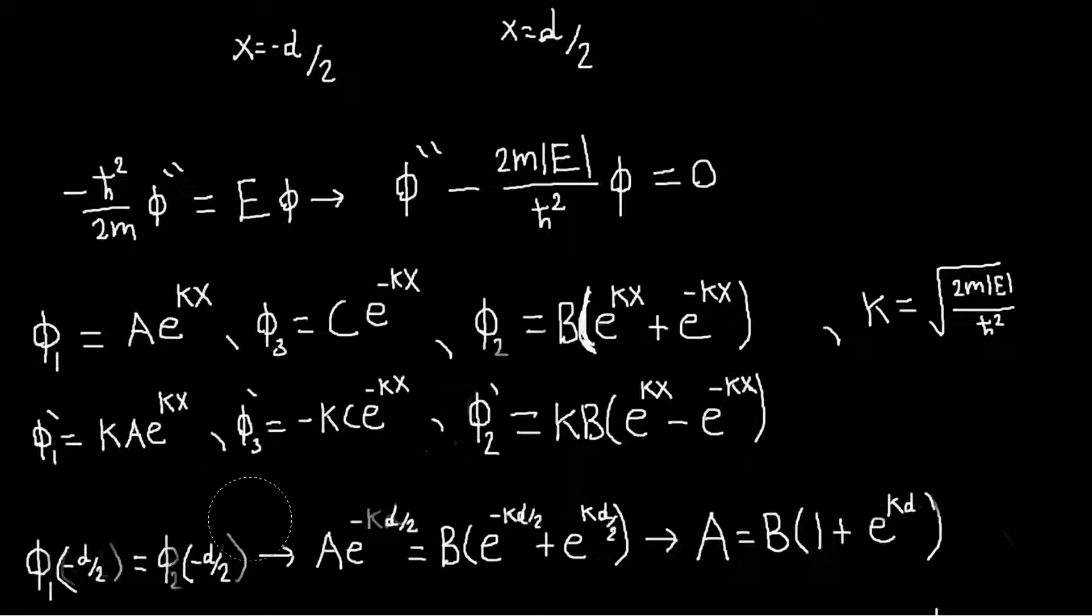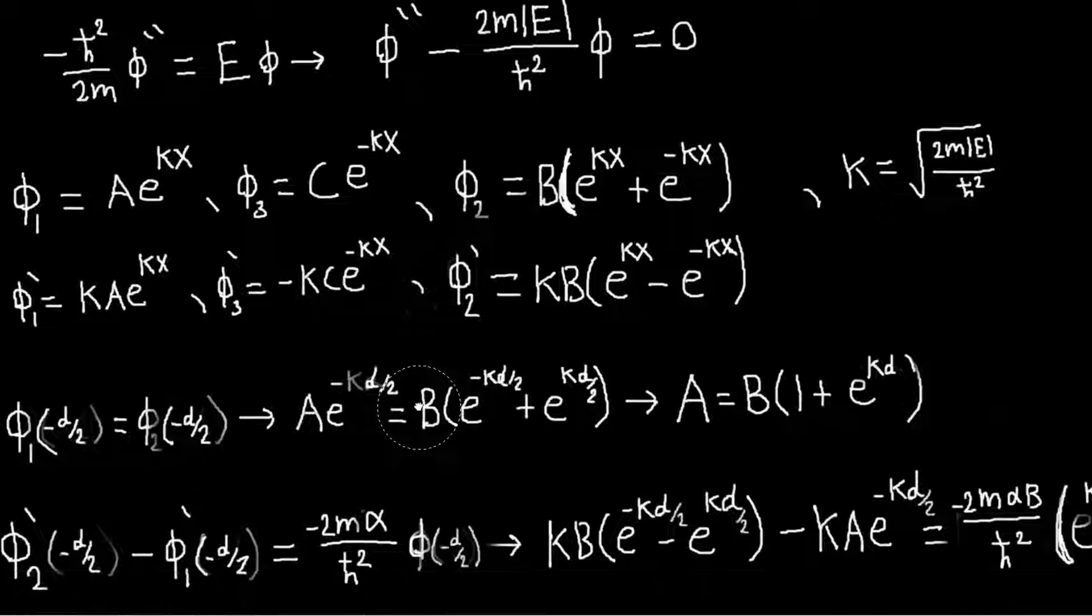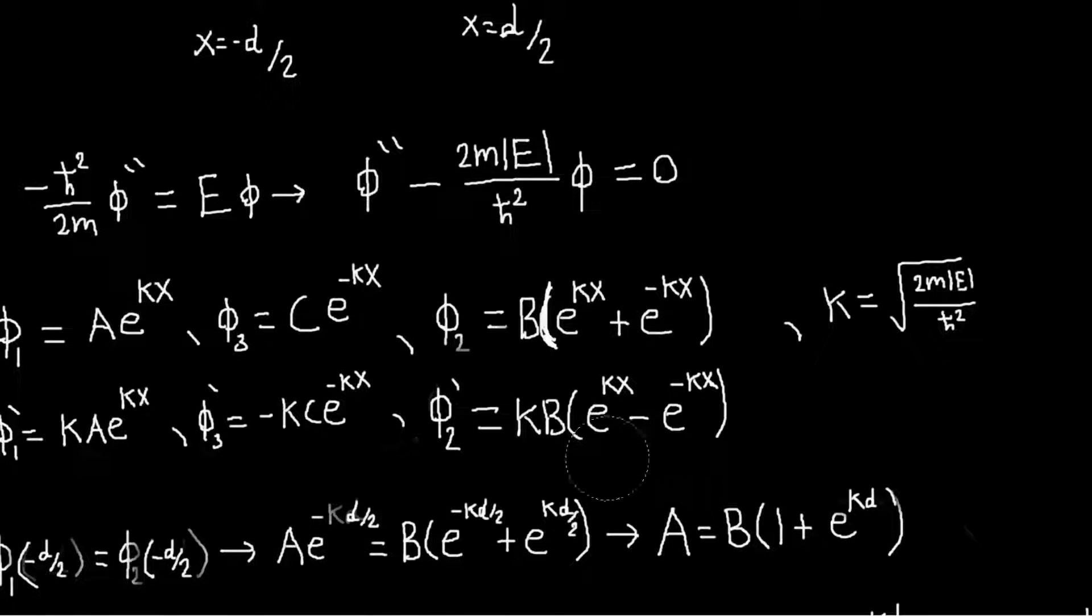And we'll get another... When you do the other boundary condition that the wave function should be continuous across this well, you will just get the same kind of equation. It'll just tell you that it'll be the same equation only with c instead of a. So that'll just tell us that a is equal to c, which we probably could have guessed. That's kind of what happened last time.